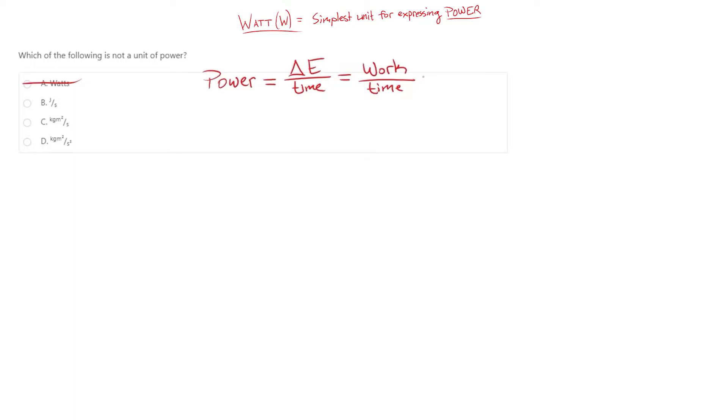Either way, both work and energy are always going to be represented by joules, whereas the fundamental measurement for time is seconds. This allows us to go ahead and eliminate answer choice B. Just like we were able to break watts down into joules per second by considering the work divided by time equation for power.